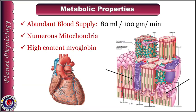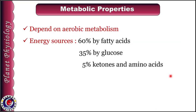Now coming to the metabolic properties. Cardiac muscles generate ATP by oxidative phosphorylation, and to support this they have abundant blood supply of about 80 ml per 100 g per minute. They also contain numerous mitochondria and a high myoglobin content, which helps in oxygen availability. Since cardiac muscles mainly work on aerobic metabolism, the main substrate utilized is fatty acids, followed by glucose, and then about 5% from ketone bodies and amino acids. This means it does not rely heavily on glucose, whose levels keep fluctuating. Additionally, fatty acids generate a greater number of ATPs than glucose via oxidative phosphorylation, which is essential for their continuous contraction.